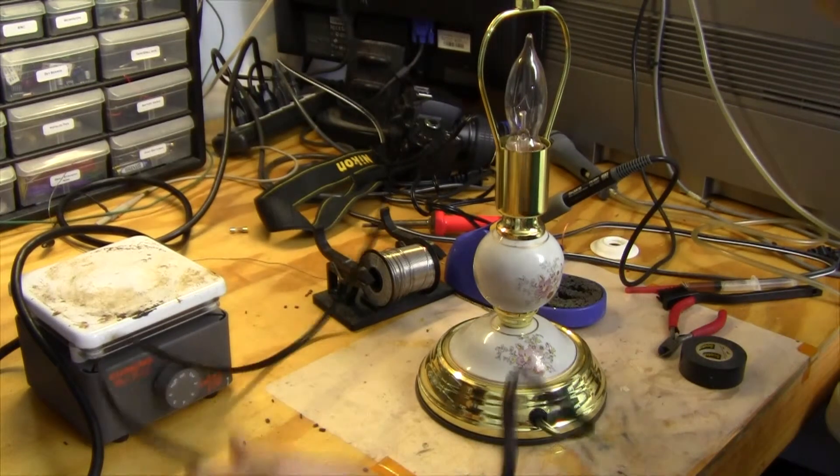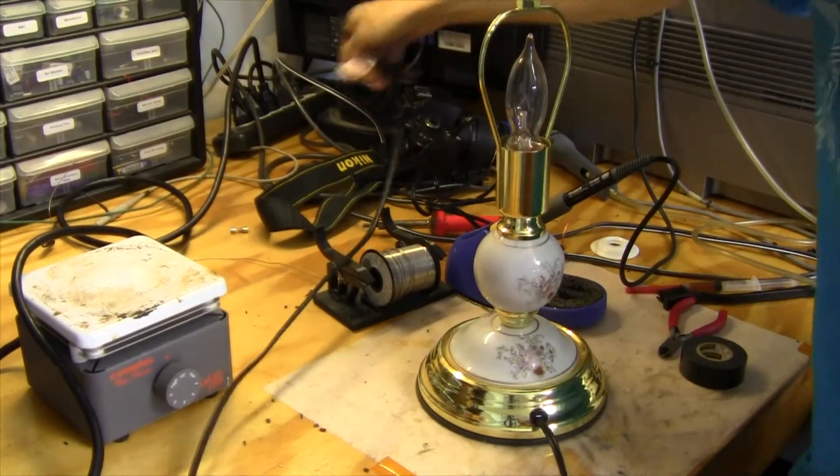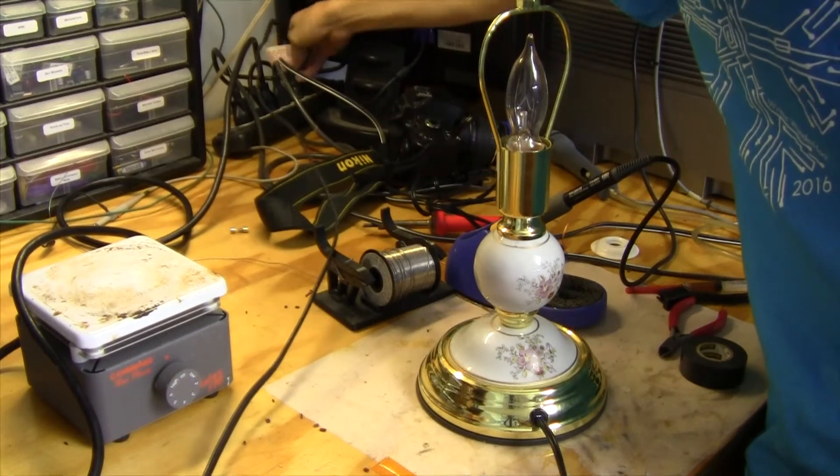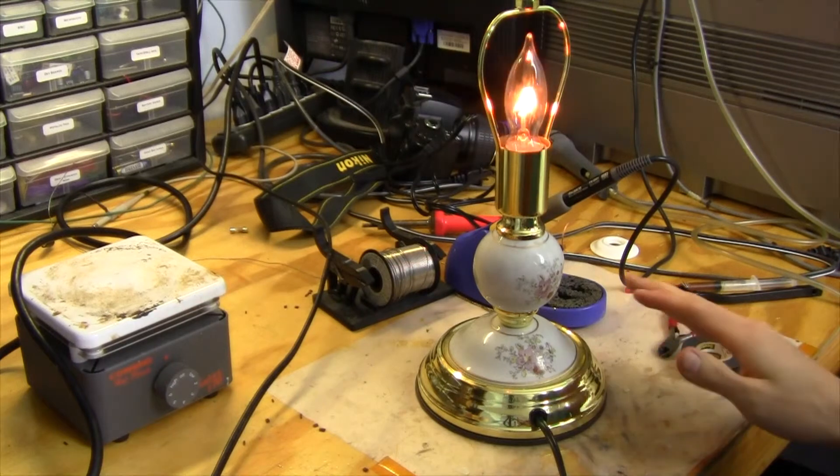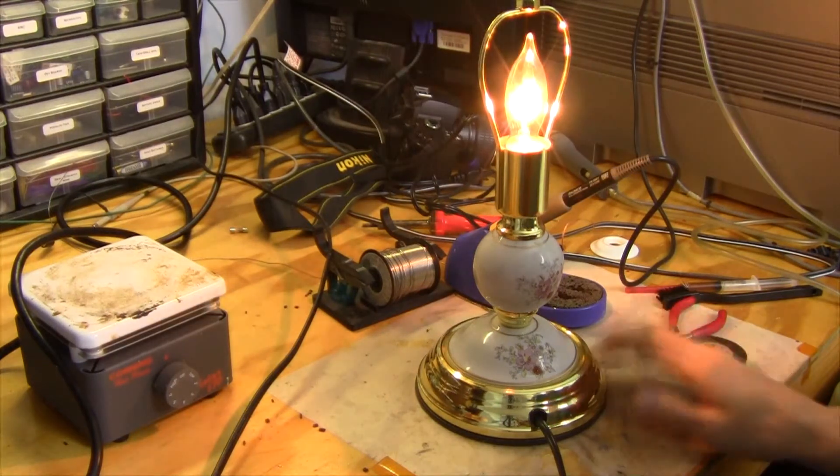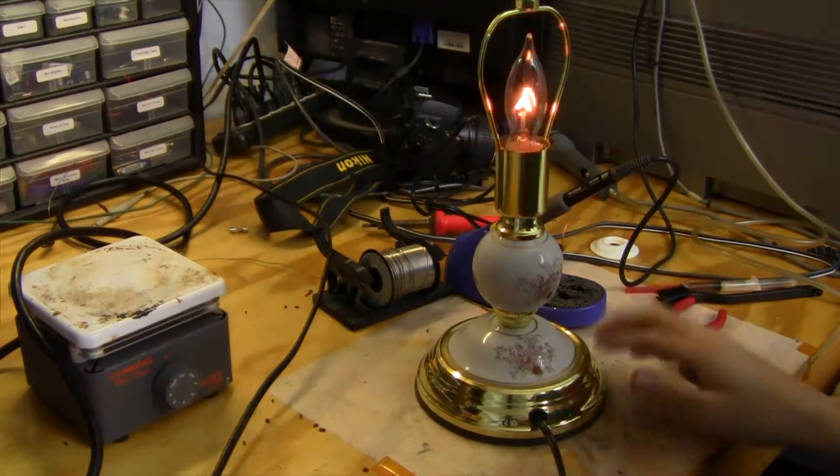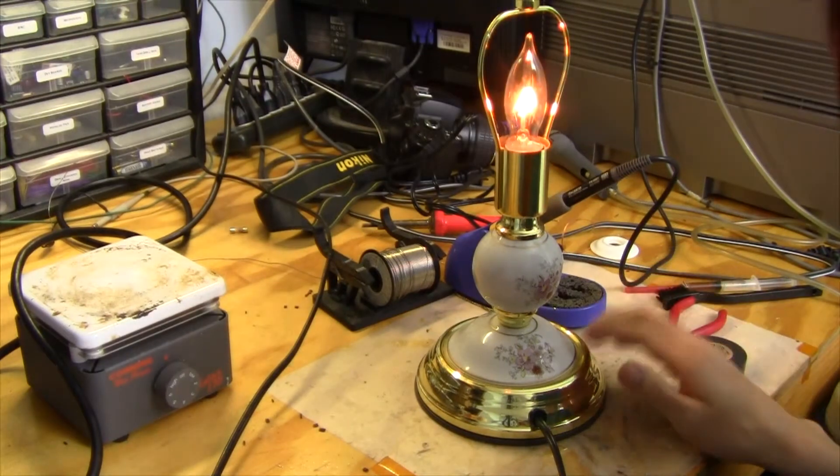And plug it into the power strip in the back and the lamp didn't turn on which is a good sign. And looks like it's working. You can see there's three brightness settings on the lamp and then the fourth setting is to turn it off again. It does look pretty nice.